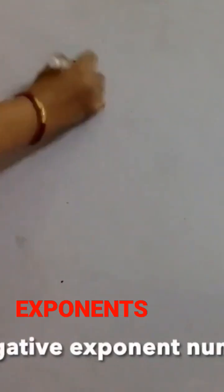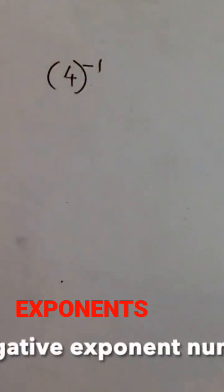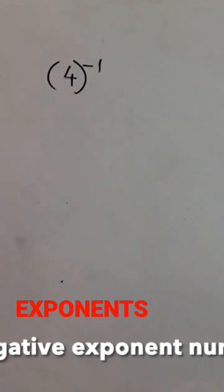Which is 4 to the power minus 1. They wanted us to write it as a rational number. Before this it was a fraction and all the powers were positive. Now the powers are negative.